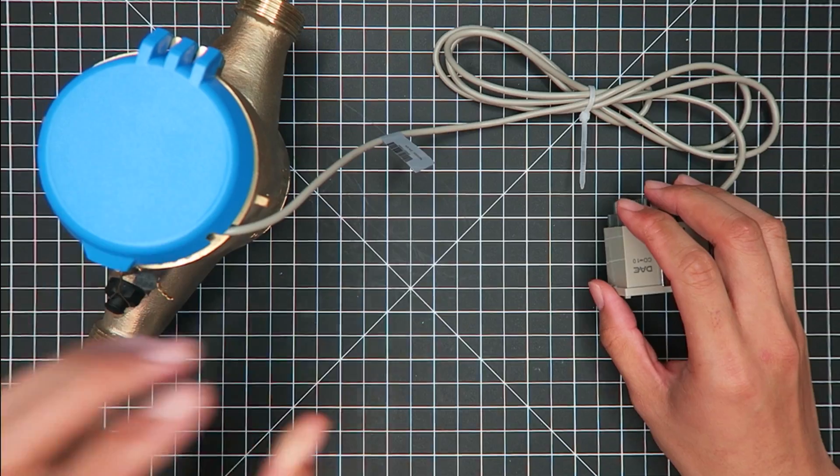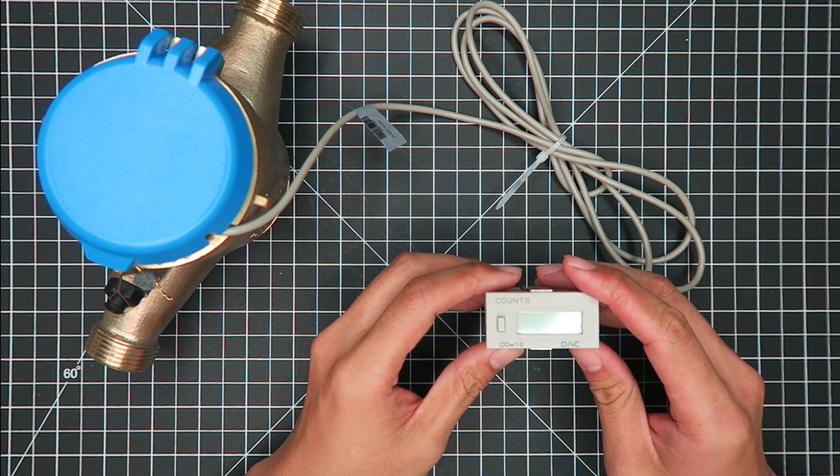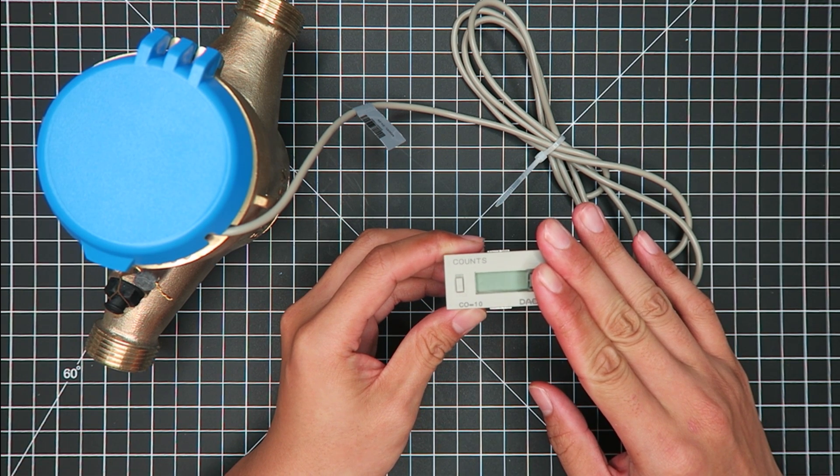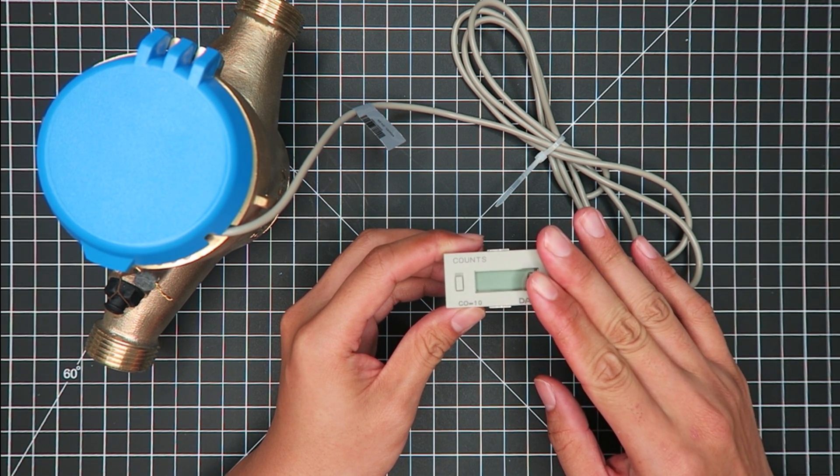To mount the device to the wall, there's a few different choices. The most simple one will be cutting an opening in the drywall and placing the CO-10 at that location.